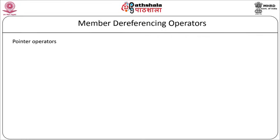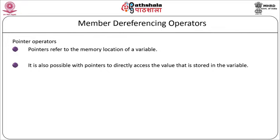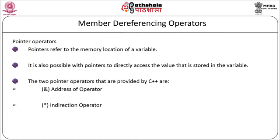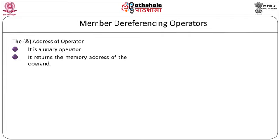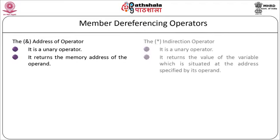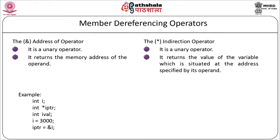Pointers refer to the memory location of a variable, and it is possible to directly access the value stored in a variable through pointers. The two pointer operators provided by C++ are: the address operator (&) — a unary operator that returns the memory address of the operand — and the indirection operator (*) — a unary operator that returns the value at the address specified. Example: int i; int *iptr; i=3000; iptr=&i;